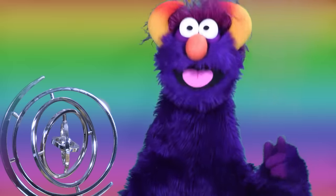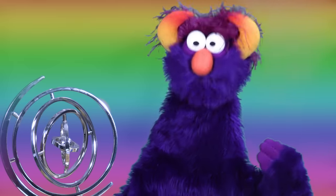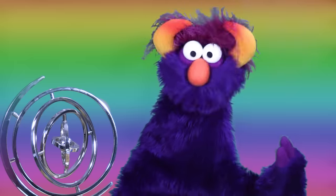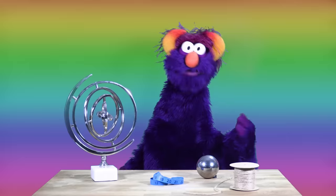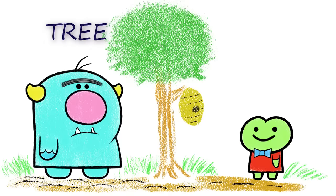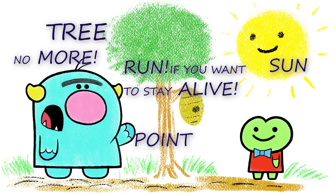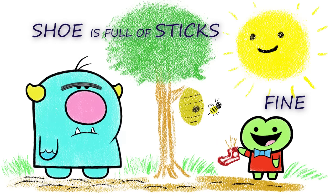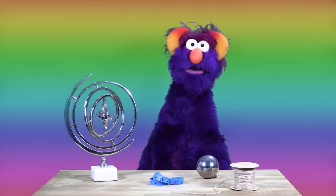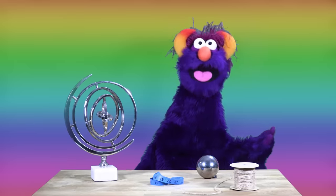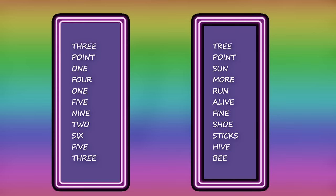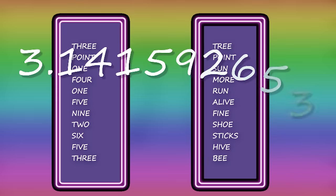Now let's make a story out of those words, because it's easier to remember a story than just a random list of words. You and your friend are sitting under a tree. He points at the burning sun and says, 'No more — run if you want to stay alive.' You say, 'I'm fine. Besides, my shoe is full of sticks. Look — a hive and one cute little bee.' That was a really good story, and now we know the first ten digits of pi: 3.141592653.